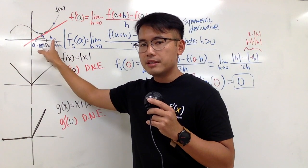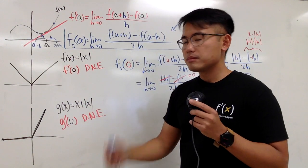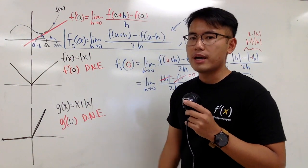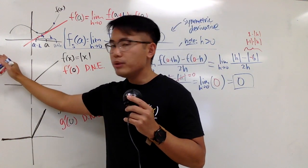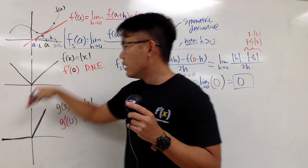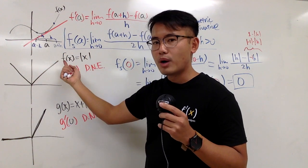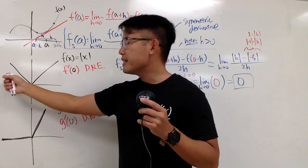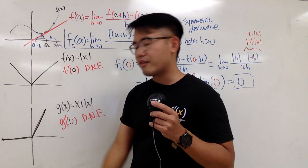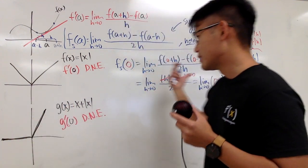Let me give a quick geometric interpretation. With the symmetric derivative, you are essentially finding the average of the slope from the left and from the right. Looking at absolute value of x, the slope on the left-hand side is negative 1 and on the right-hand side is positive 1. Negative 1 plus 1 is 0, divided by 2 gives 0 as the average — and that's the symmetric derivative at that point.